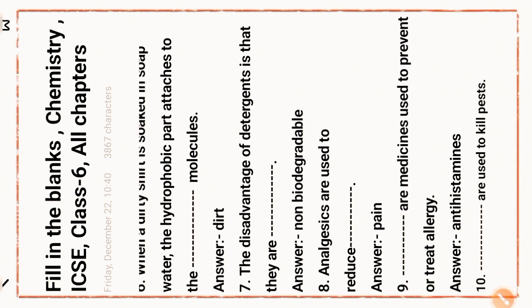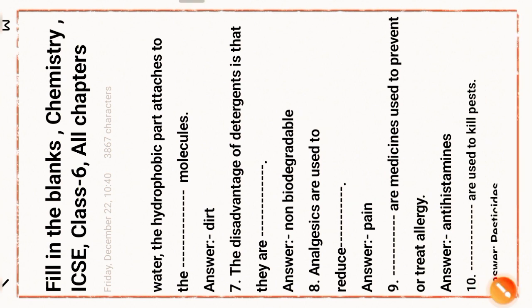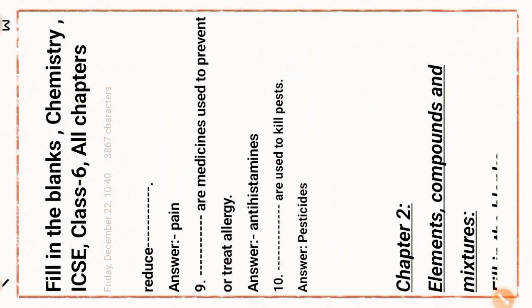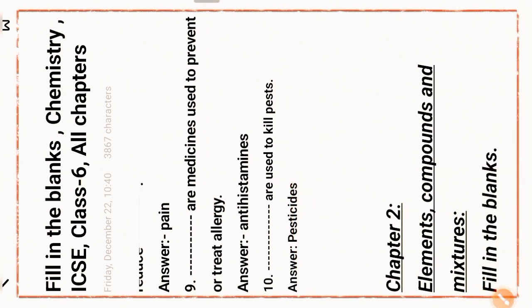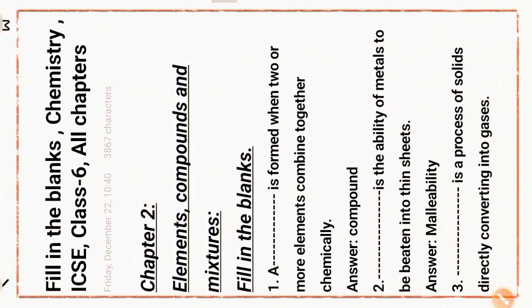Analgesics are used to reduce pain. Next question: what medicine is used to prevent or treat allergy? Answer: antihistamines. Next question: pesticides are used to kill pests. Now moving on to Chapter 2: Elements, Compounds and Mixtures — fill in the blanks.